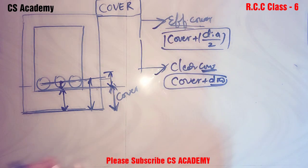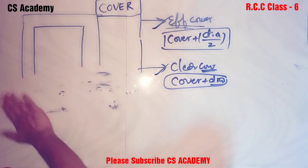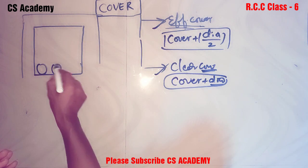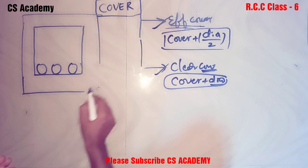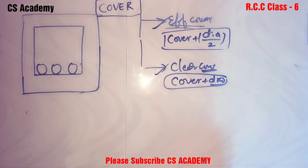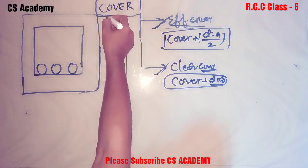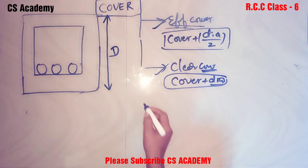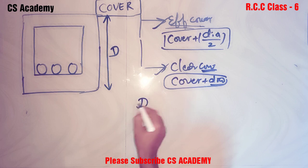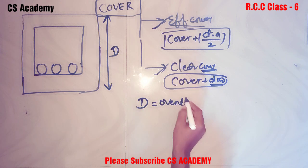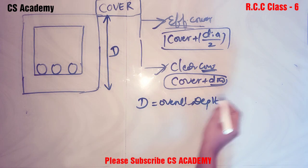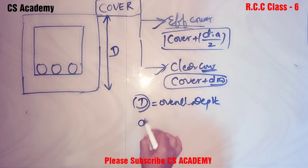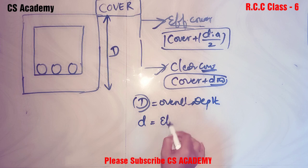Now if we consider a singly reinforcement beam, I am reinforcing in the tensile zone only. The total depth of the concrete on the outer side is called the overall depth, denoted as capital D. There is also the term small d, which is the effective depth.